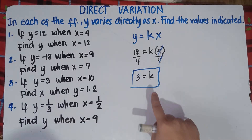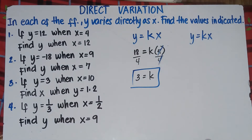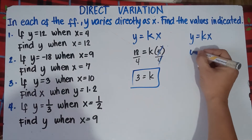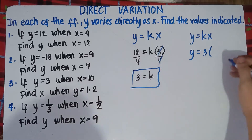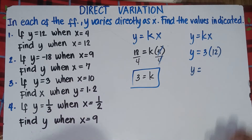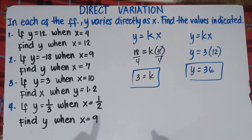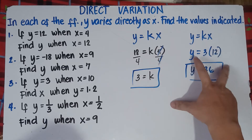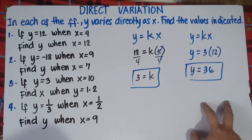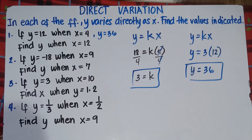Now once you get k, simply substitute this k from the second statement. Your equation is y equals kx. You are told to find y, so copy y equals k, which is 3, times x, which is 12. So y equals 3 times 12, that would be 36. That's the answer for number one — y equals 36.